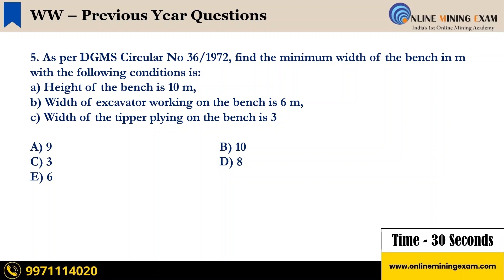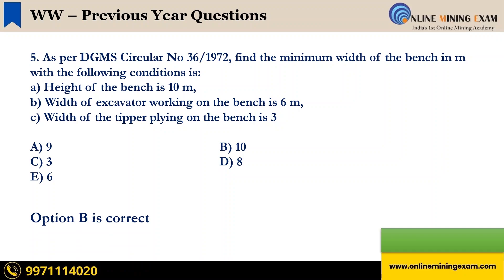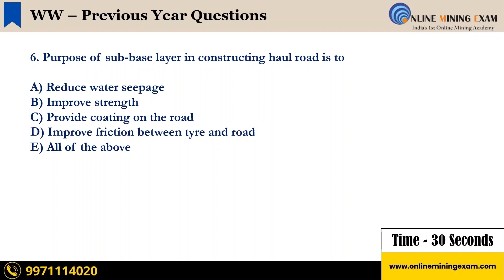Question 5: As per DGMS Circular Number 36, 1972, find the minimum width of the bench in meters with the following conditions: A — height of the bench is 10 meters, B — width of excavator working on the bench is 6 meters, C — width of the tipper plying on the bench is 3 meters. Options: 9, 10, 3, 8, 6. The correct answer is B.